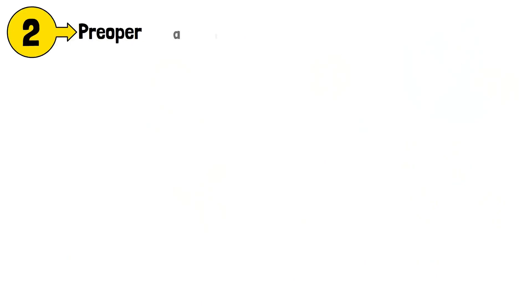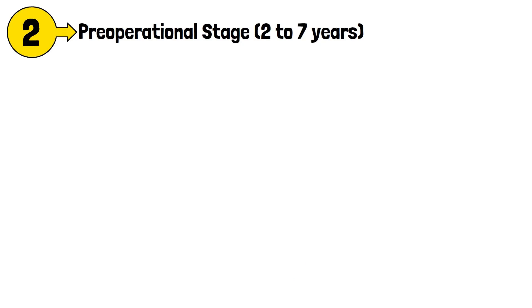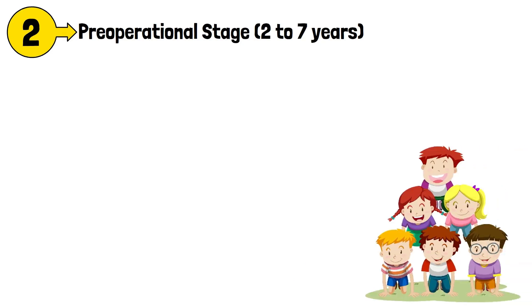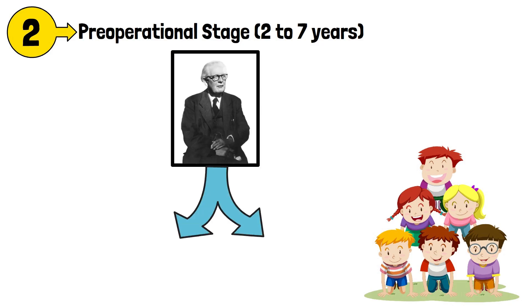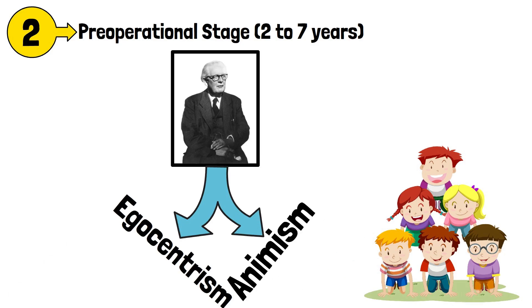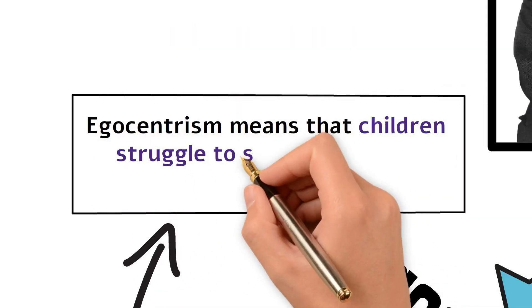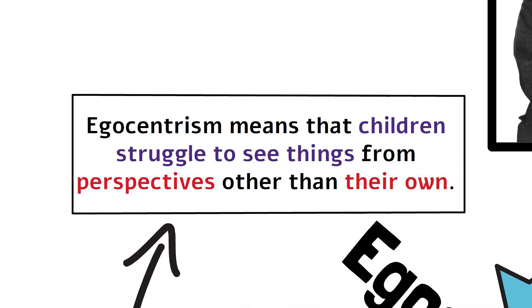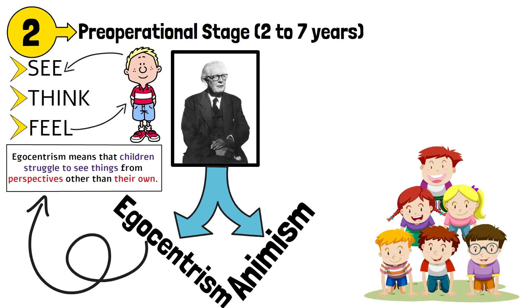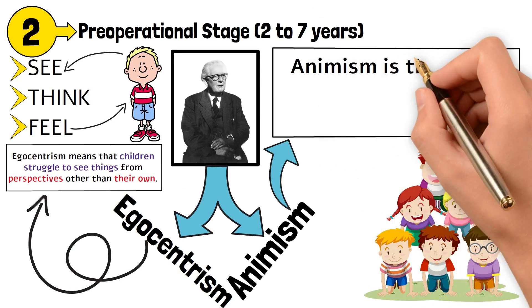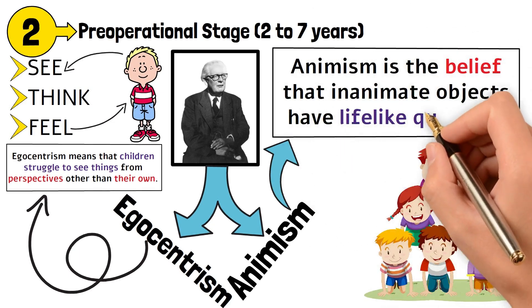Stage 2: the Pre-operational stage, from two to seven years. Children at this stage start using symbols to represent objects but still lack logical reasoning. Piaget identified two main characteristics: egocentrism and animism. Egocentrism means that children struggle to see things from perspectives other than their own — they assume that others see, think, and feel the same way they do. Animism is the belief that inanimate objects have lifelike qualities.